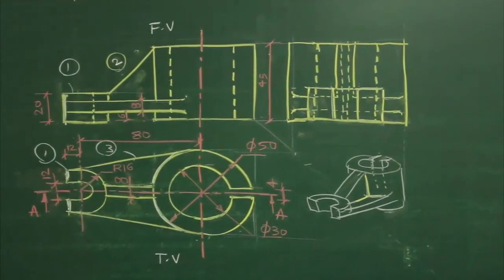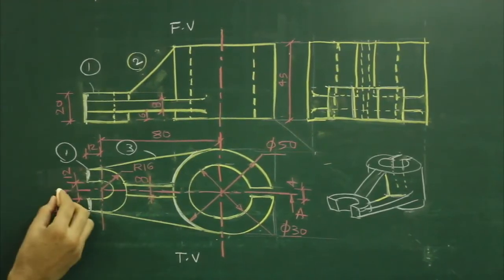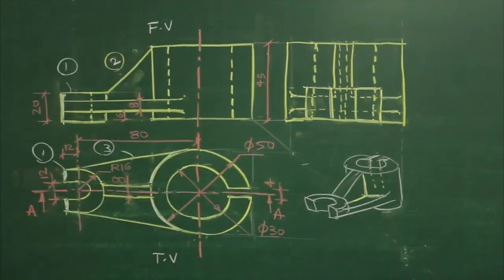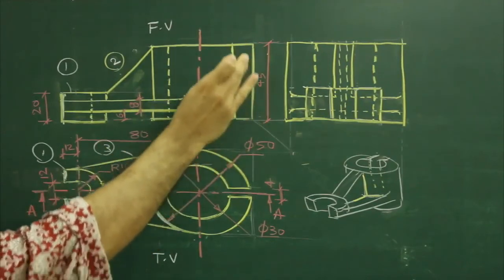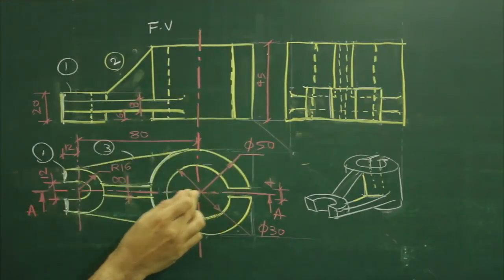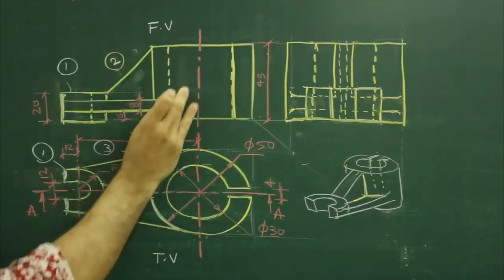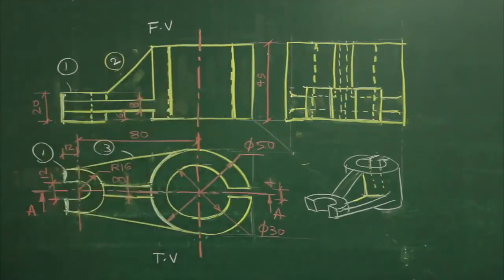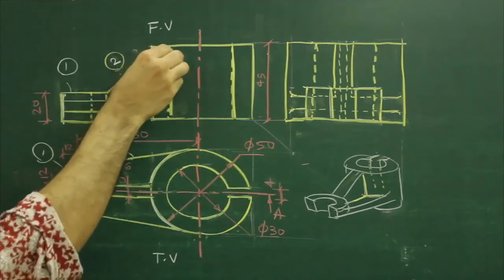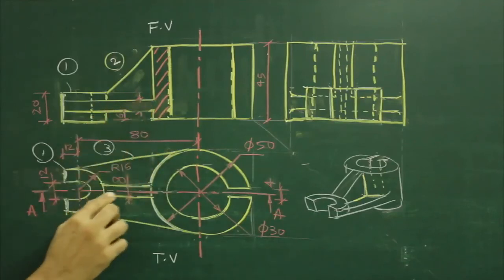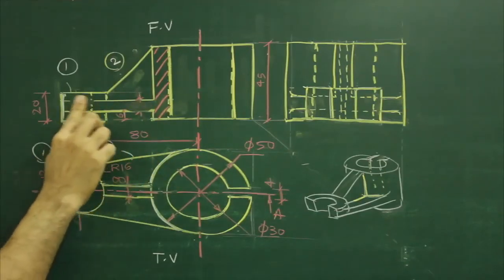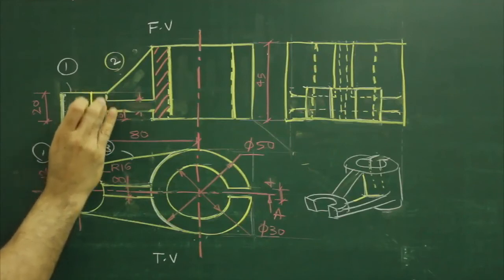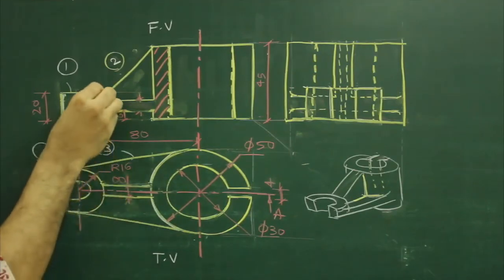Now we will draw the sectional front view along AA. They have given a cutting plane line passing through this object. Where it is not cutting any portion, that portion will become dark but there won't be any hatching, because we are not cutting anything. Where we are cutting this portion, it will become dark and hatching will come here.